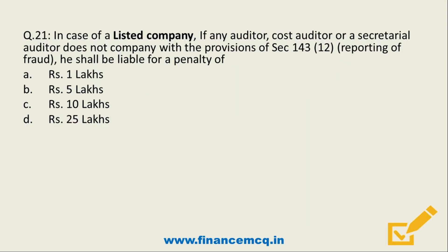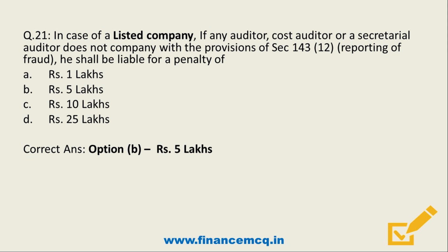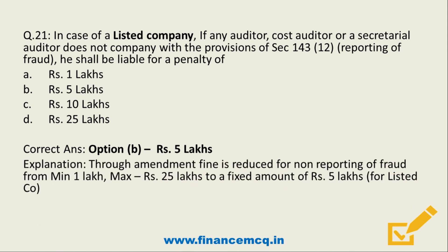Question 21. In case of a listed company, if any auditor, cost auditor or secretarial auditor does not comply with the provision of section 143.12 — that is reporting of fraud — he shall be liable for a penalty of: option A 1 lakh, option B 5 lakh, option C 10 lakh, or option D 25 lakh. The answer is option B, 5 lakh. Through this amendment, the fine is reduced for non-reporting of fraud from a range of minimum 1 lakh and maximum 25 lakh to a fixed amount of Rs. 5 lakh, and it is for listed companies only.